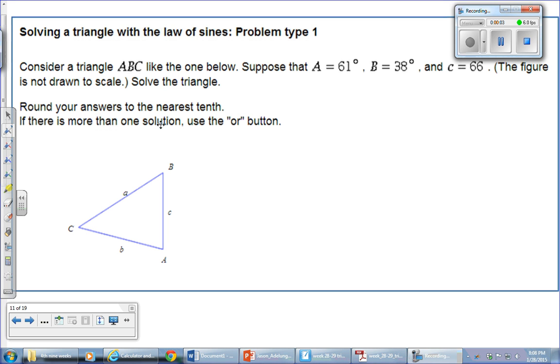Okay, so the next topic we're going to talk about here is solving a triangle with the law of sines, problem type 1. On this one, you're going to notice one thing's a little bit different. It's one of the first times we see a triangle that's not a right triangle.